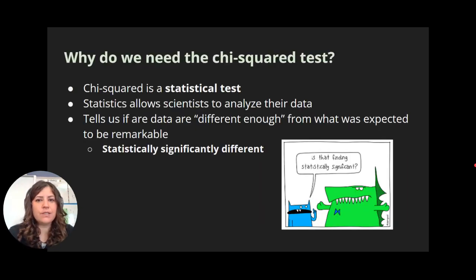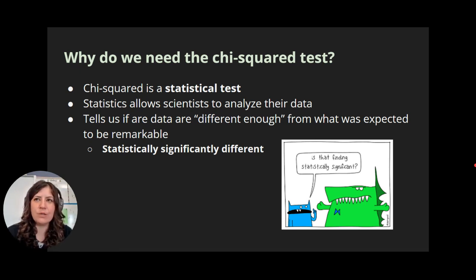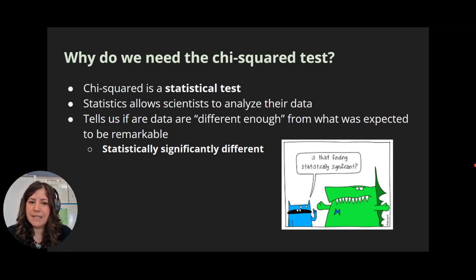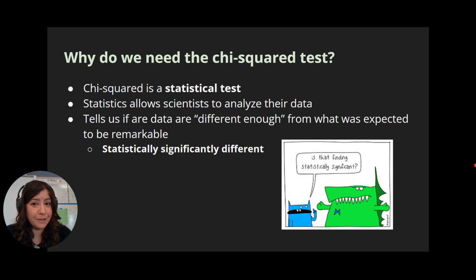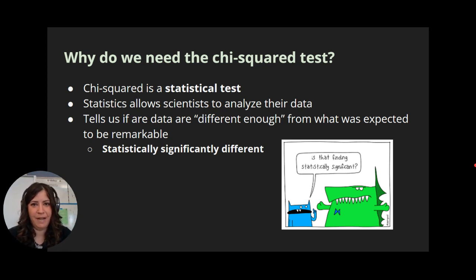So why do we need the chi-squared test? This is an example of a statistical test. Statistics are really important in science because they allow scientists to analyze and make conclusions about the strength of their data. Statistical tests tell us if data are different enough from what we expected in order to be remarkable, in order to actually matter.